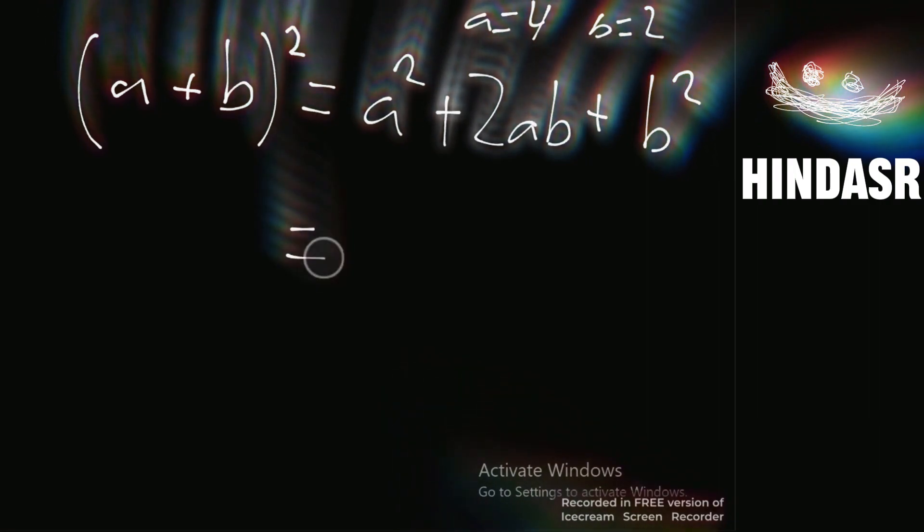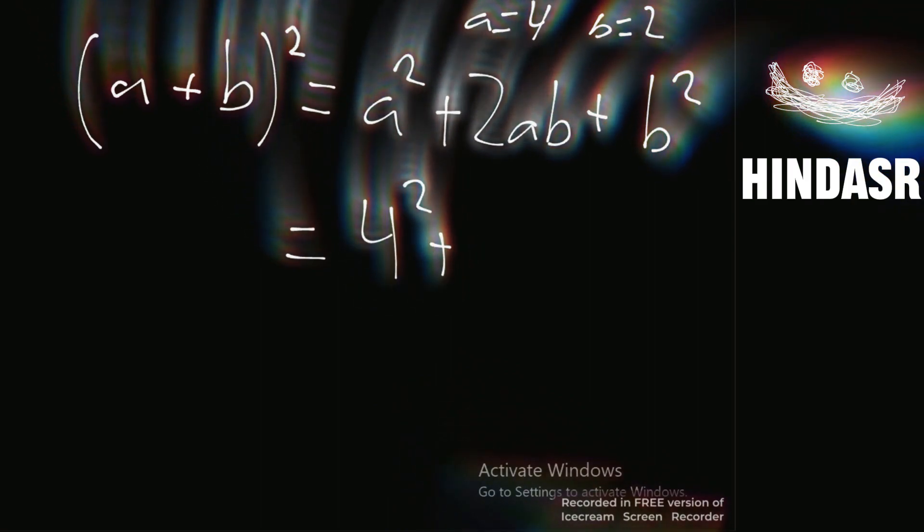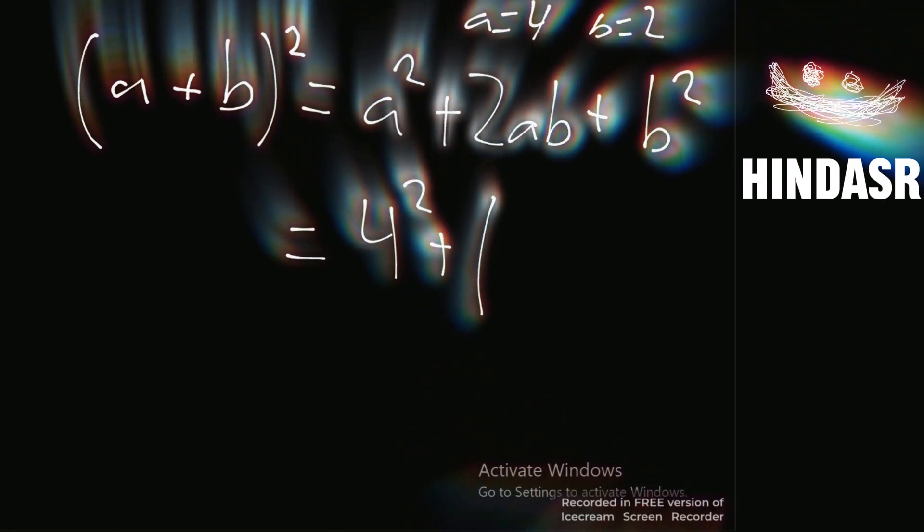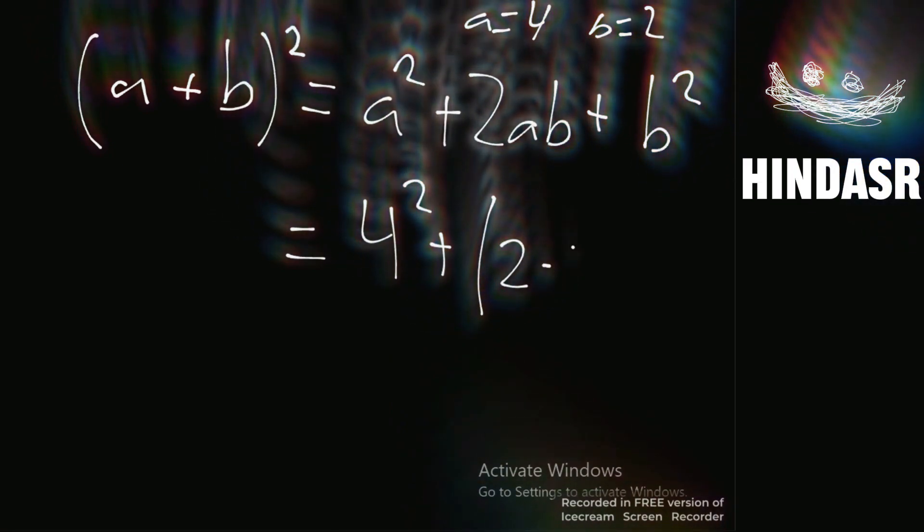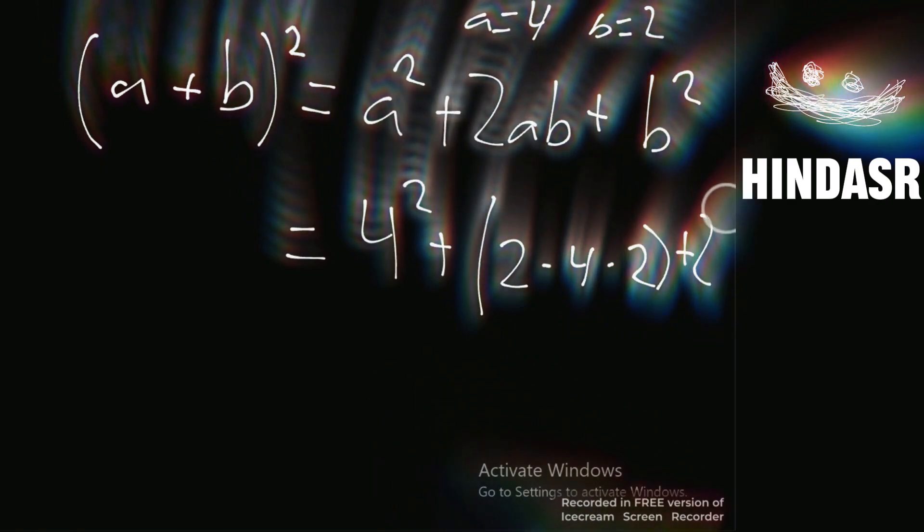So this is going to be 4 squared plus parentheses 2 times 4 times 2 parentheses plus 2 squared.